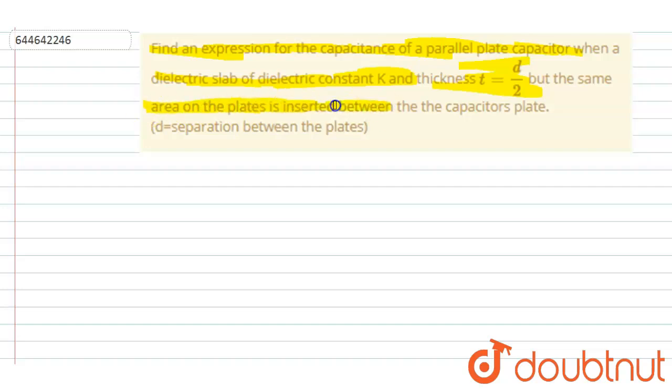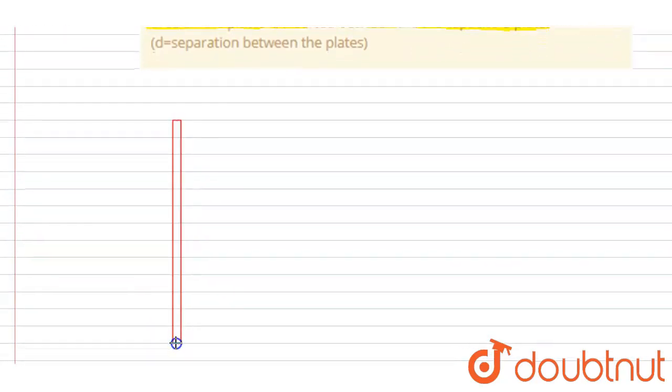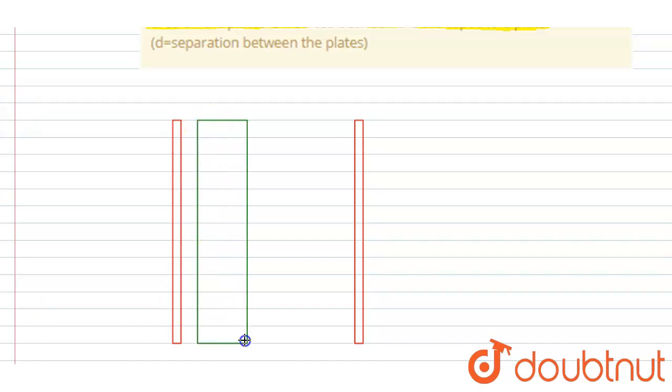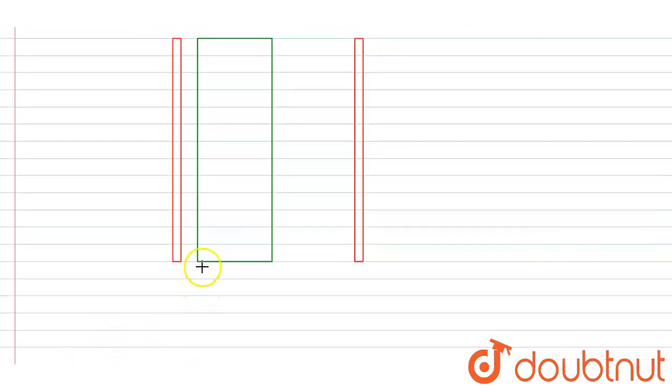So if you see, let's say that these are the two plates of the capacitor, and in between the plates a dielectric slab of thickness d/2 is inserted. So let's say this is the slab. If you see, the thickness of the slab is d/2, whereas the distance between the plates is d. So this distance is d, but the slab thickness is d/2.